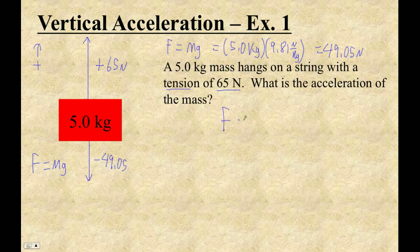We can use F equals MA. The sum of the forces is 65 up, 49.05 down, and then that equals 5 times A. And this is an unknown acceleration problem. So 65 minus 49.05 is 15.95. And then divide by 5. And you get 3.19.